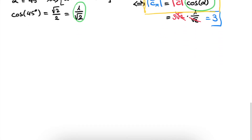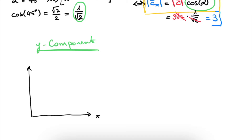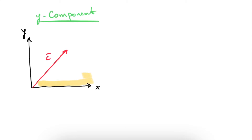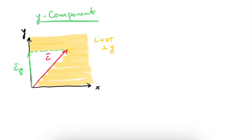Let's now do the same for the y component. We draw our coordinate system and vector c. To find the y component, we do a very similar graphical simulation — however, now we send in light parallel to the x axis and perpendicular to the y axis. The shadow cast by the c vector is the cy vector, the vector associated with the y component of c. Following the dotted line gives components (0, 3).